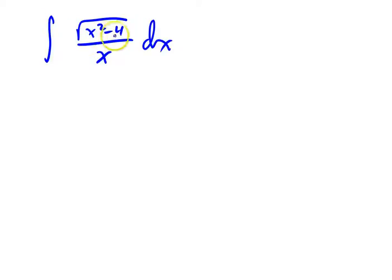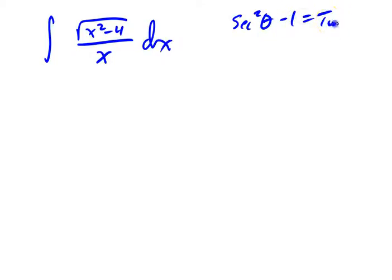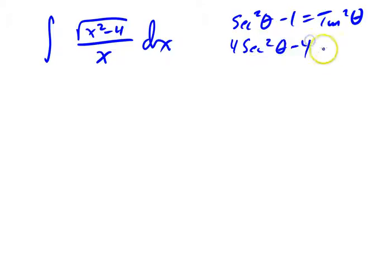Underneath the square root, I see an x squared minus 4. Now, it's not x squared minus 1. If it were x squared minus 1, I'd be looking at secant squared theta minus 1 as tangent squared theta. But it's a 4, not a 1. So essentially what I need to do is multiply this whole equation by 4. So 4 secant squared theta minus 4 equals 4 tangent squared theta.